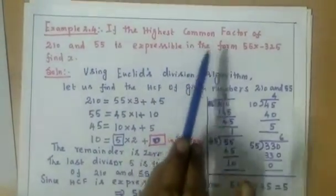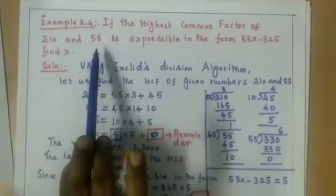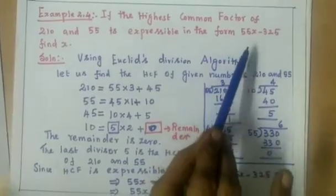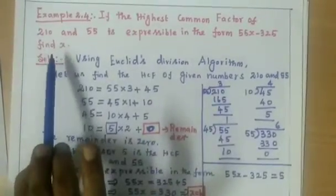If the highest common factor of 210 and 55 is expressible in the form 55x minus 325, find x.